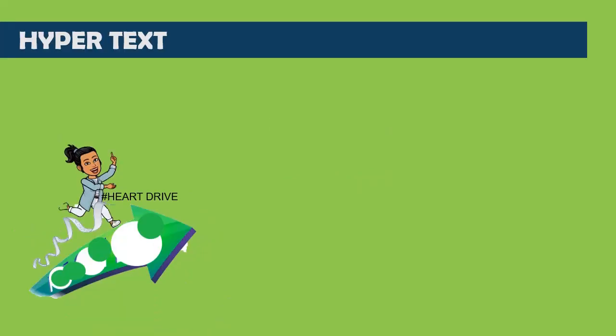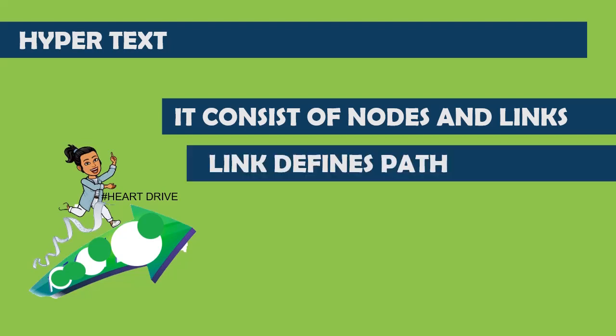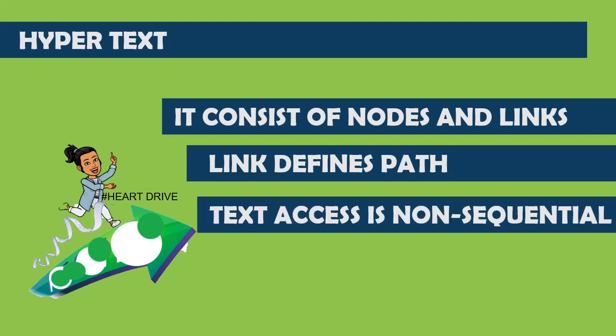Hypertext is a combination of text, notes, and links. Here, words will be used as links which have some path. So whenever you click that text, it will redirect you to some other website or webpage. The text access will not always be sequential.